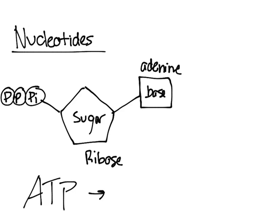ATP holds energy. You could think of it as the molecule that allows you to use energy — it's really important. The energy is held between the third and the second phosphate, so when the third phosphate group breaks off, it releases a lot of energy.